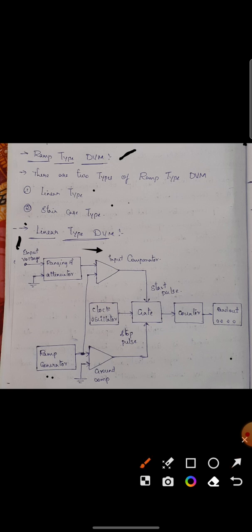Here, the input comparator has two signals. One is from the ranging and attenuator, that is from input voltage, and another one is from the ramp generator. It produces the ramp signal. So it contains two signals: one from input voltage and another from ramp generator.